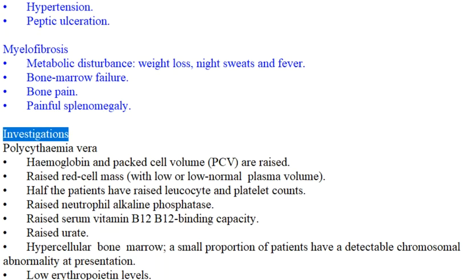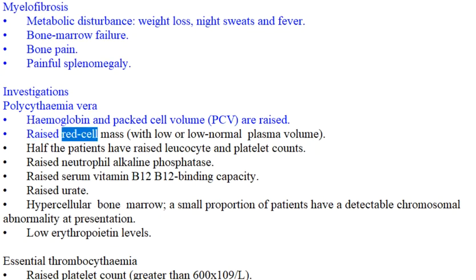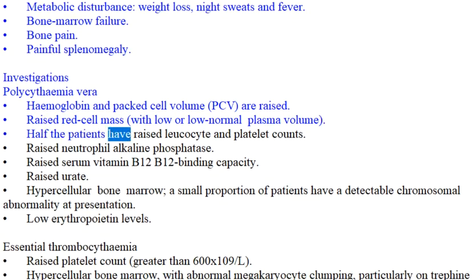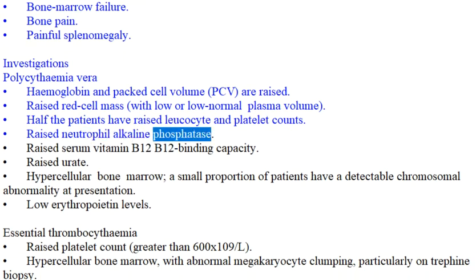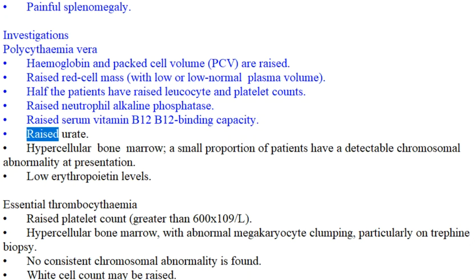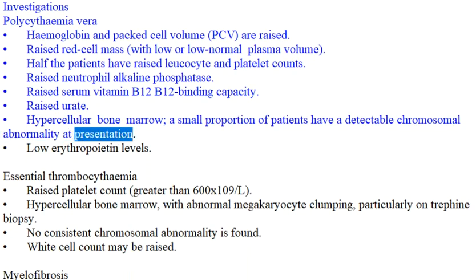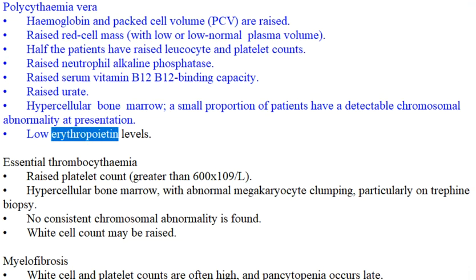Investigations — Polycythemia vera: Hemoglobin and packed cell volume (PCV) are raised. Raised red cell mass, with low or low-normal plasma volume. Half the patients have raised leukocyte and platelet counts. Raised neutrophil alkaline phosphatase. Raised serum vitamin B12 and B12 binding capacity. Raised urate. Hypercellular bone marrow; a small proportion of patients have a detectable chromosomal abnormality at presentation. Low erythropoietin levels.